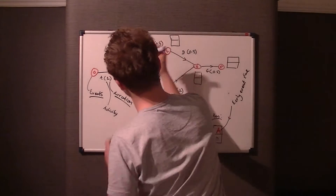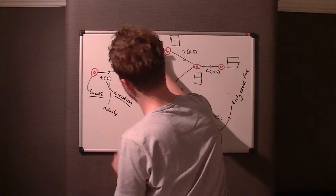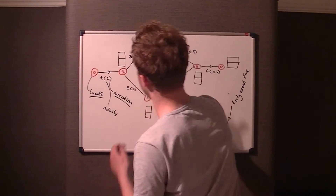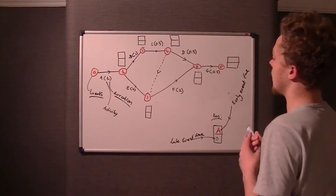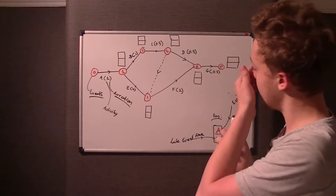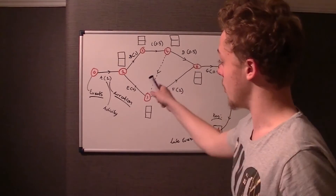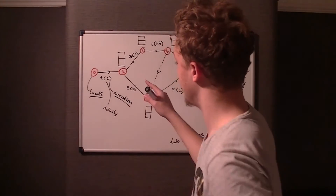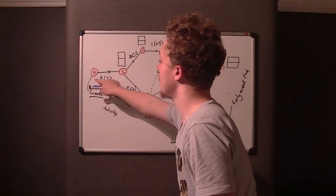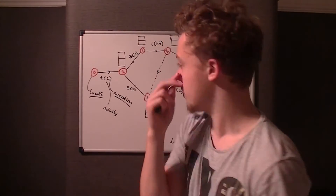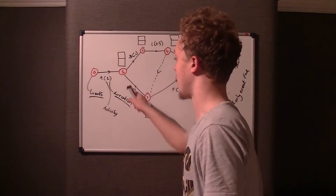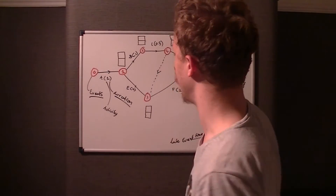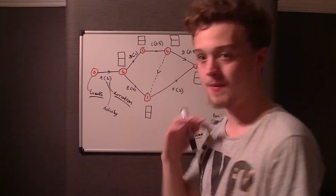The arrow between node one and two represents activity B with a duration of one. These arrows show that you must go from zero to one — you can't go from one to zero, that's what the arrow is showing.